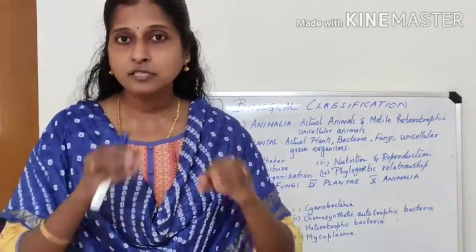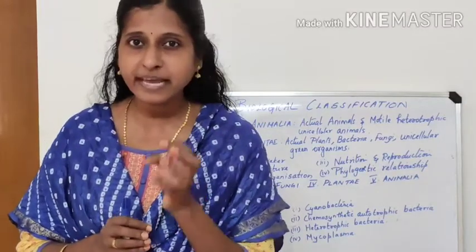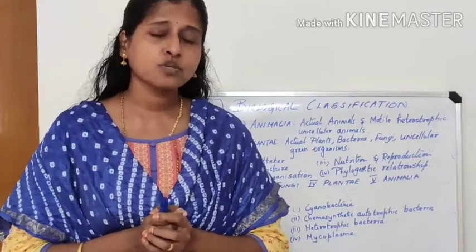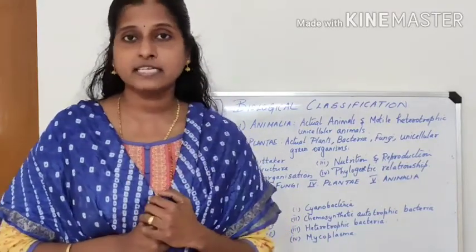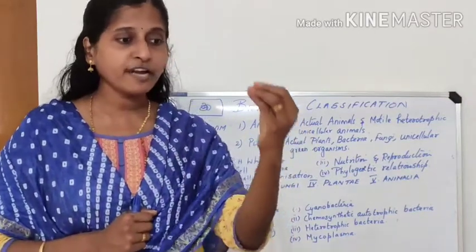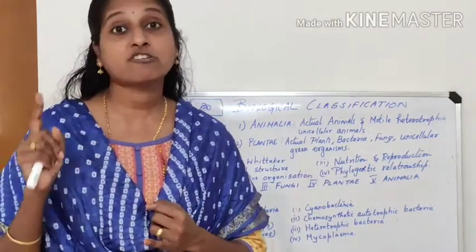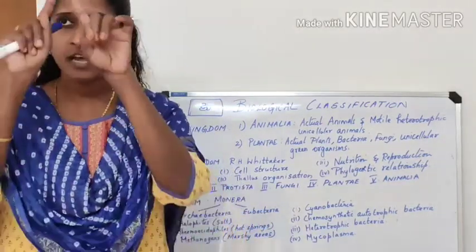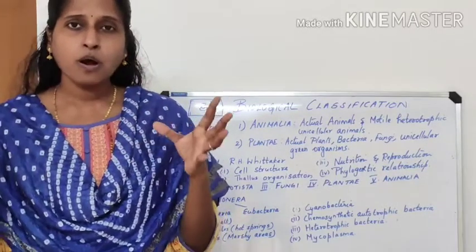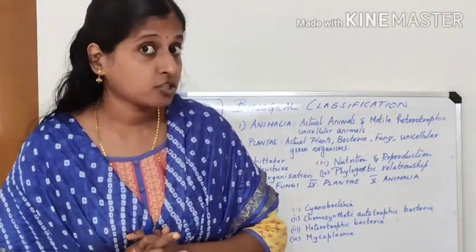For classifying organisms into these five categories, certain criteria must be used. Four criteria were considered by Whittaker. The first criterion is cell structure — how the cell is structured, what organelles are present, and what is the chemical composition.